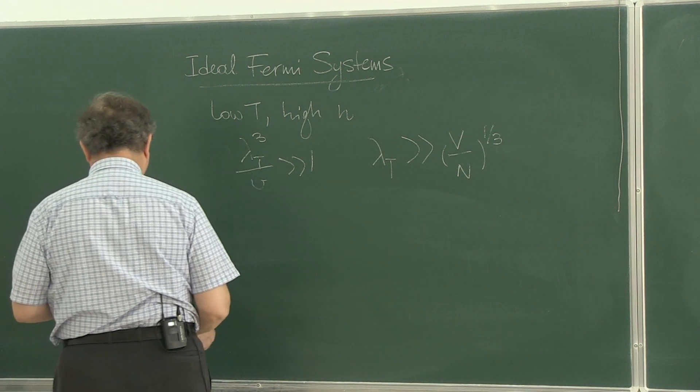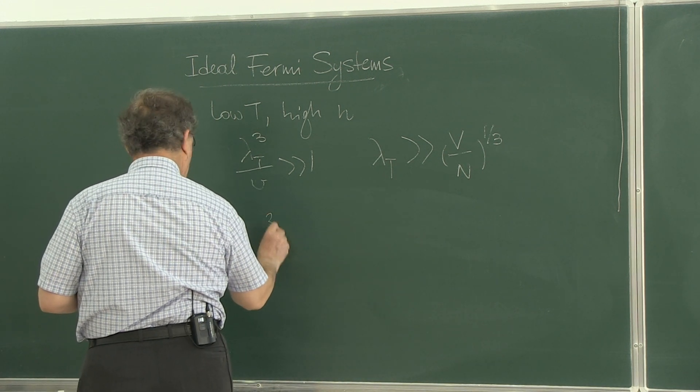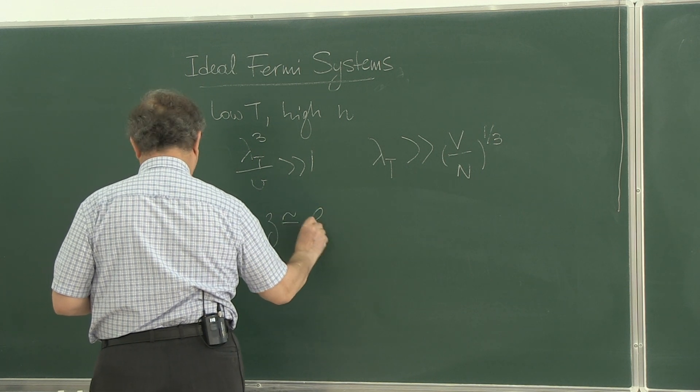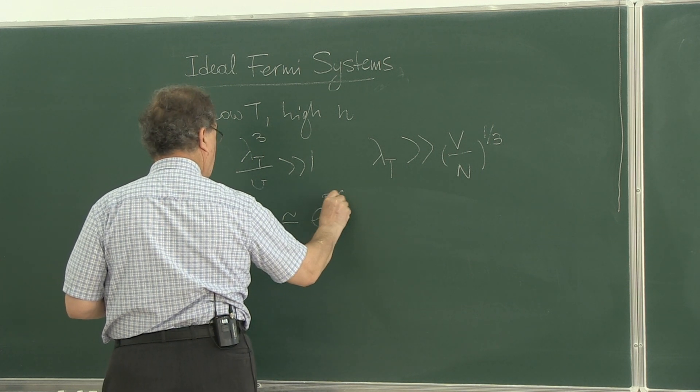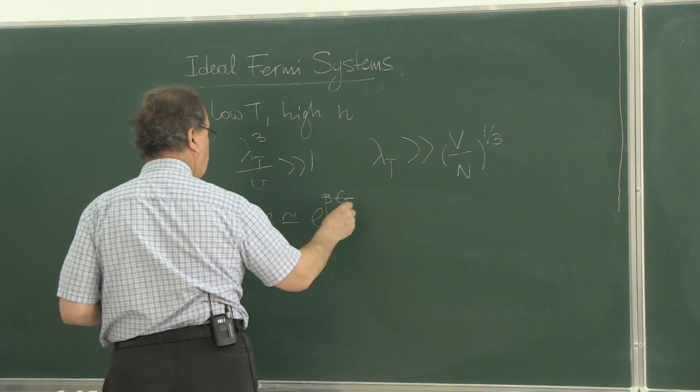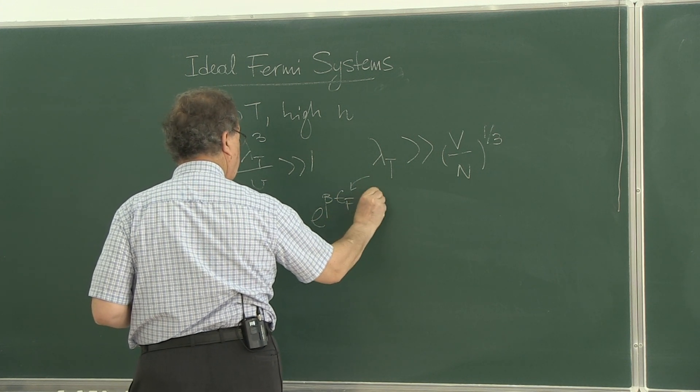In this limit, we find z more or less equal to e to the beta eF. So we come up with the concept of Fermi energy.